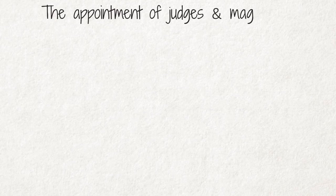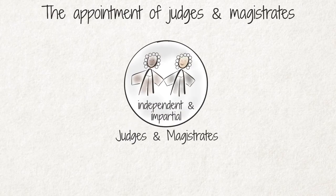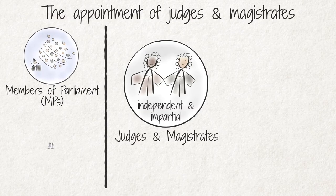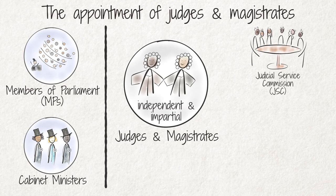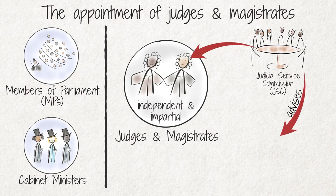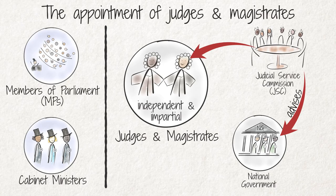Because judges and magistrates must be independent and impartial, it is very important that they are appointed in a different manner than MPs or cabinet ministers. In South Africa, the Judicial Service Commission (JSC), a body established by the constitution, plays an important role in the appointment of judges. It further advises the country's national government on any matters relating to the judiciary and the administration of justice.